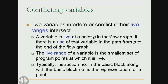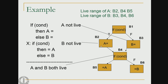More strictly, we look at program points — instruction number in the basic block and the basic block number. The live range of a variable is the smallest set of program points at which it is live. In this example, the three places where variable a is live form the live range of a, and the three places for b form the live range of b.